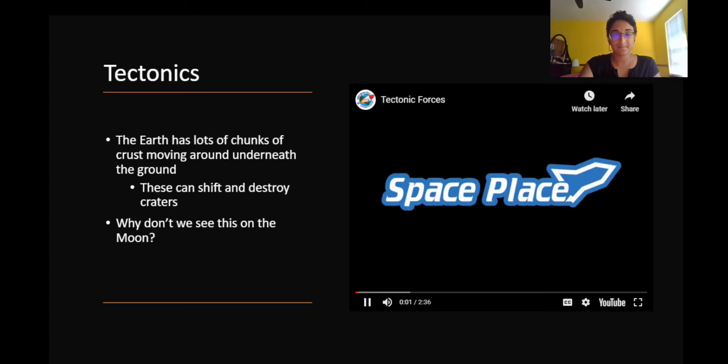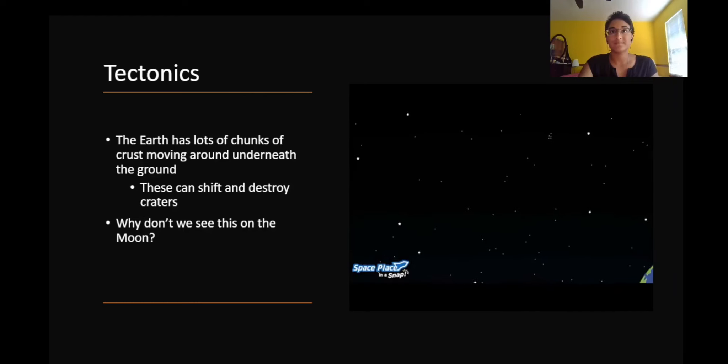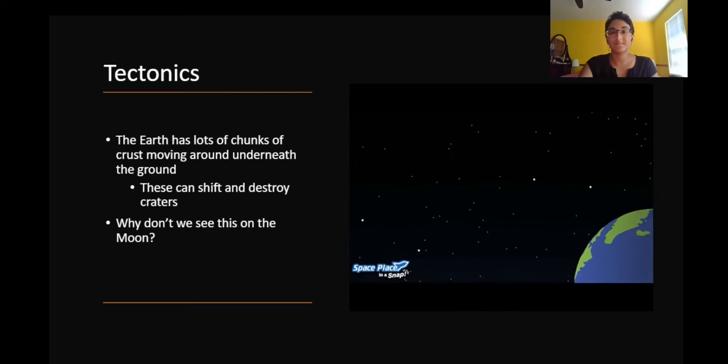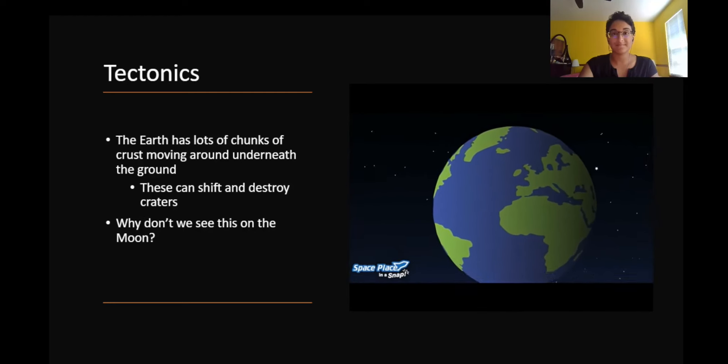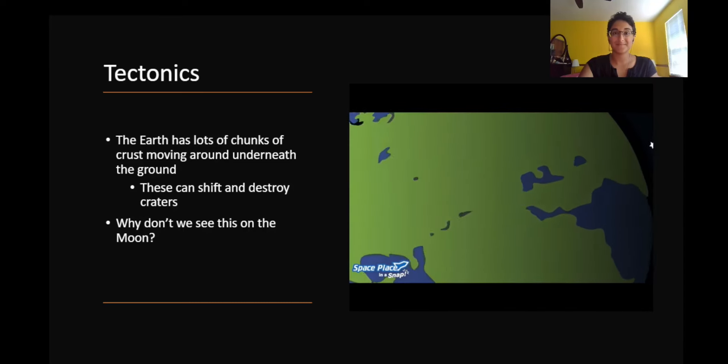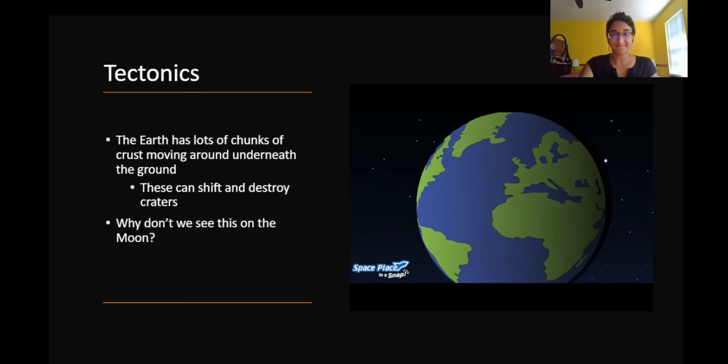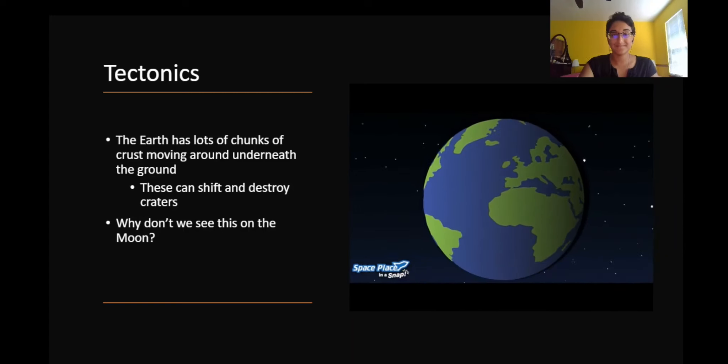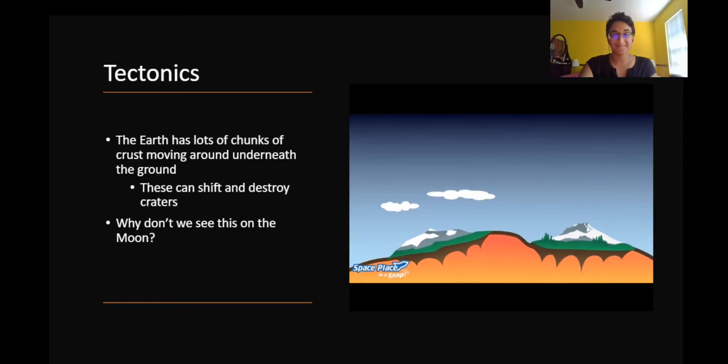Space place. In a snap. Tectonic forces. There was once a time when you could take a stroll from North or South America to Africa, no problem. There was no ocean to get in the way because all of Earth's continents were stuck together in one massive supercontinent called Pangaea. But around 180 million years ago, a rift began to form. And since then, the Americas and Africa have been drifting apart, forming the Atlantic Ocean in the process. Weird, right? Despite its rock-solid appearance, Earth's surface is constantly shifting and drifting.